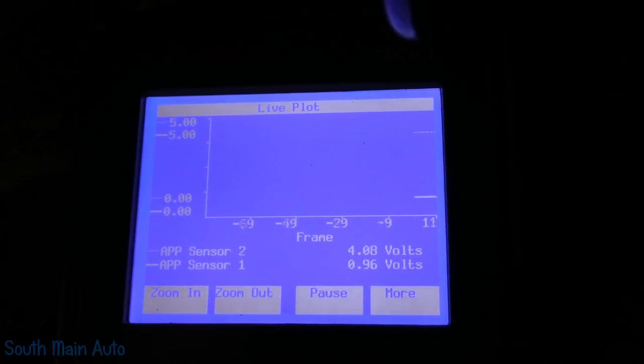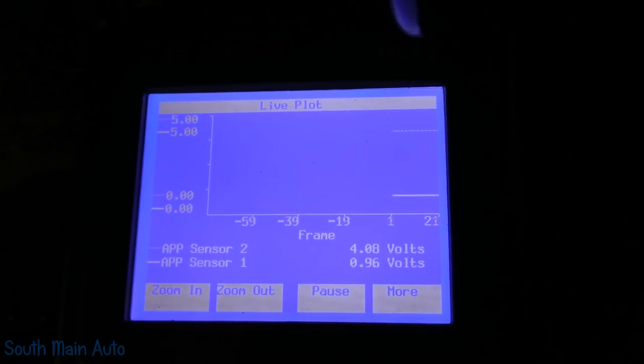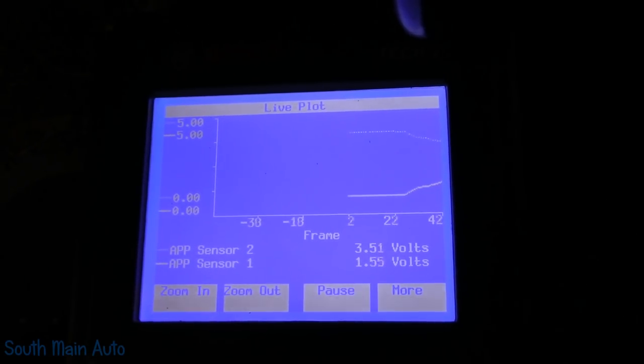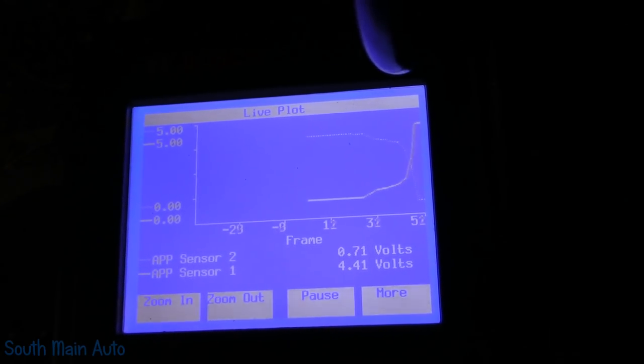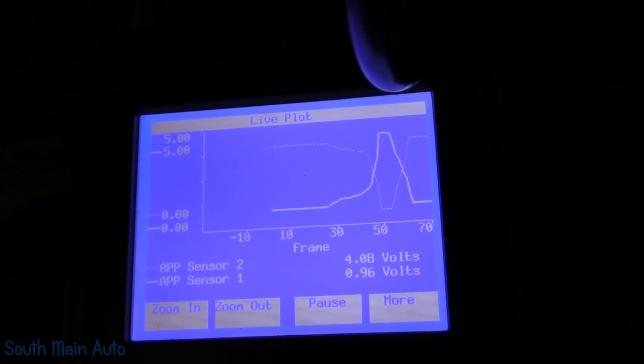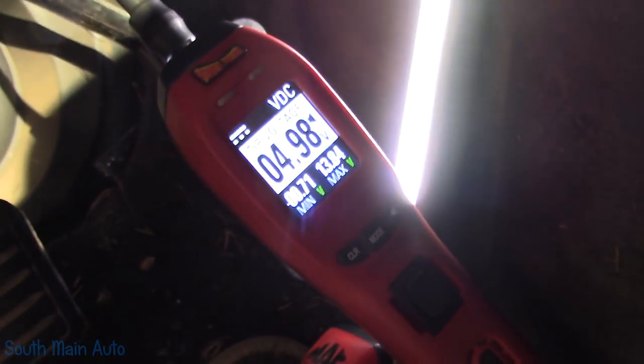Now we'll watch sensor one go up and sensor two go down. That's how they should work and you can see our five volt reference stays stable.